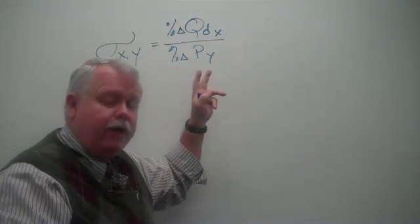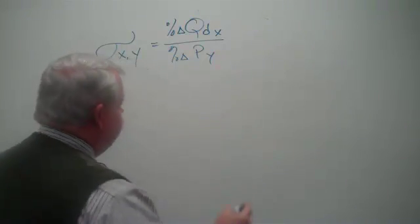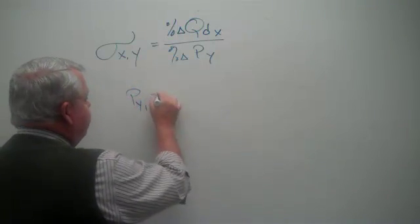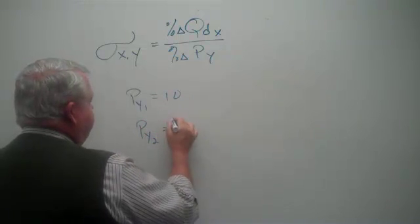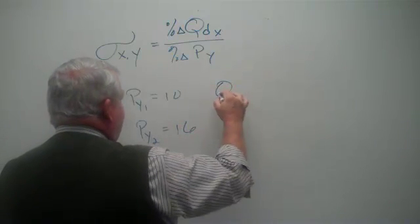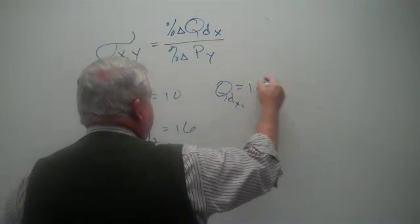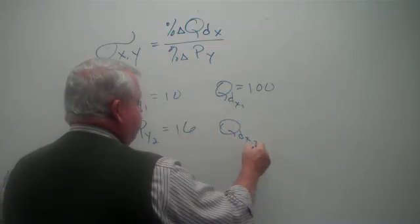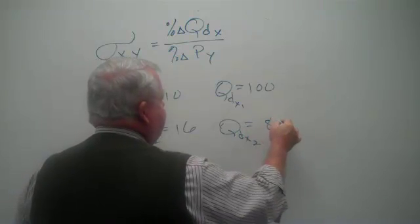Let's do one very quickly. Suppose we see that when the price of good y in the first instance is $10 and then the price of good y goes to $16. At the same time, we see that the quantity demanded of good x in the first instance was 100. But when the price of y rose, the quantity demanded of good x in the second instance decreases to 80 units.